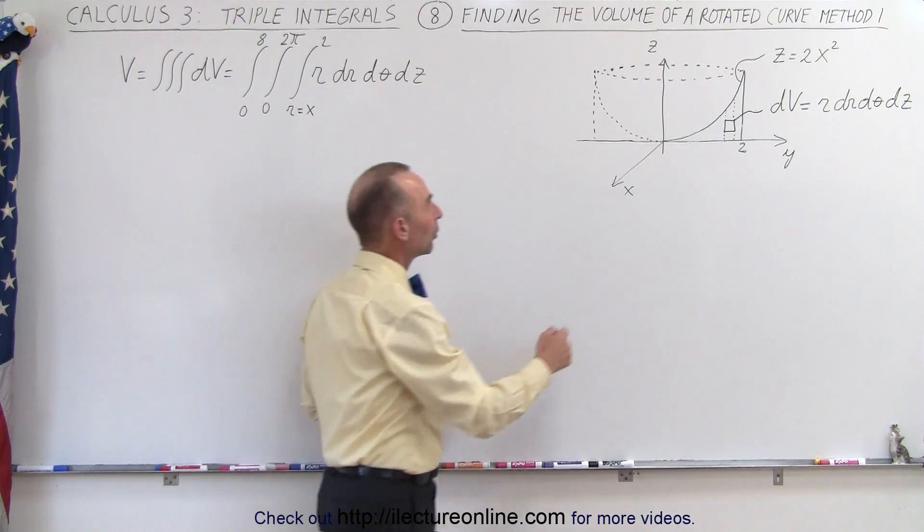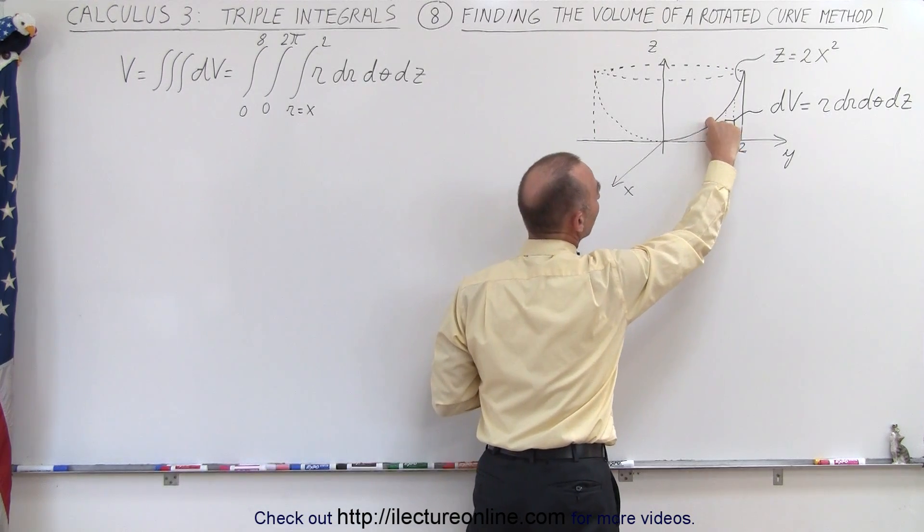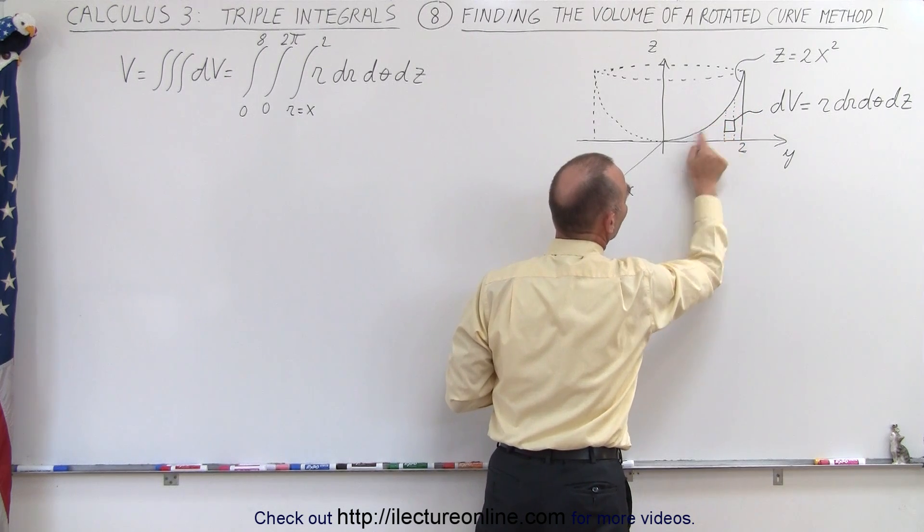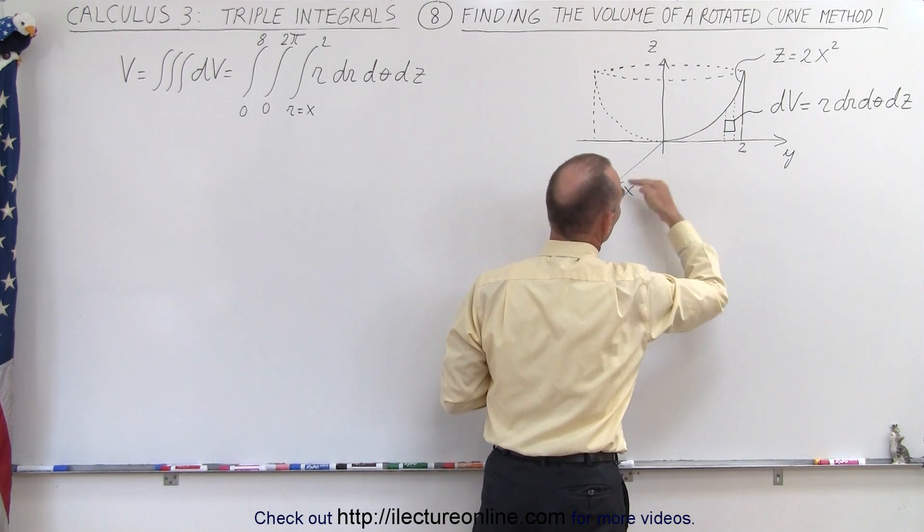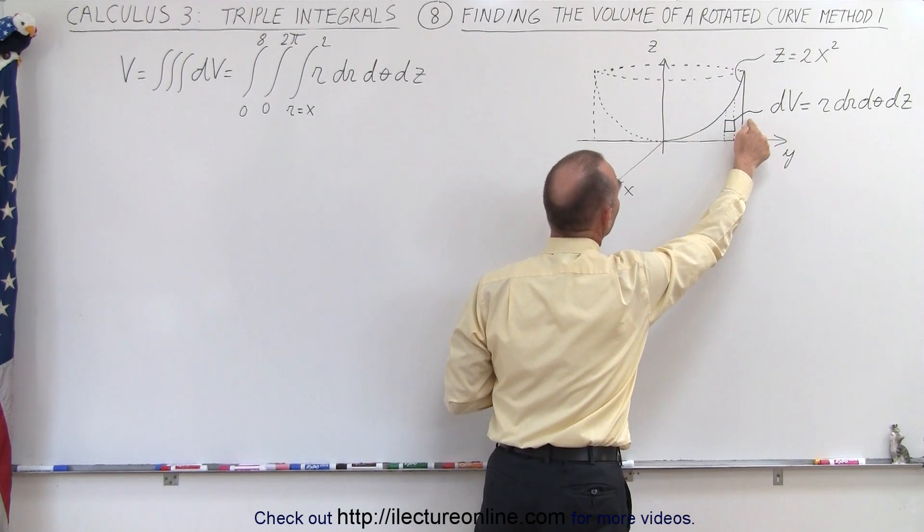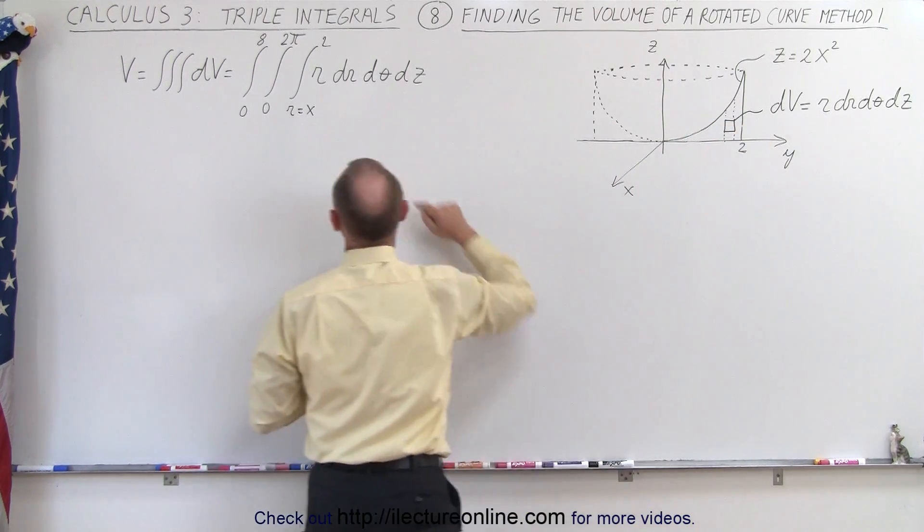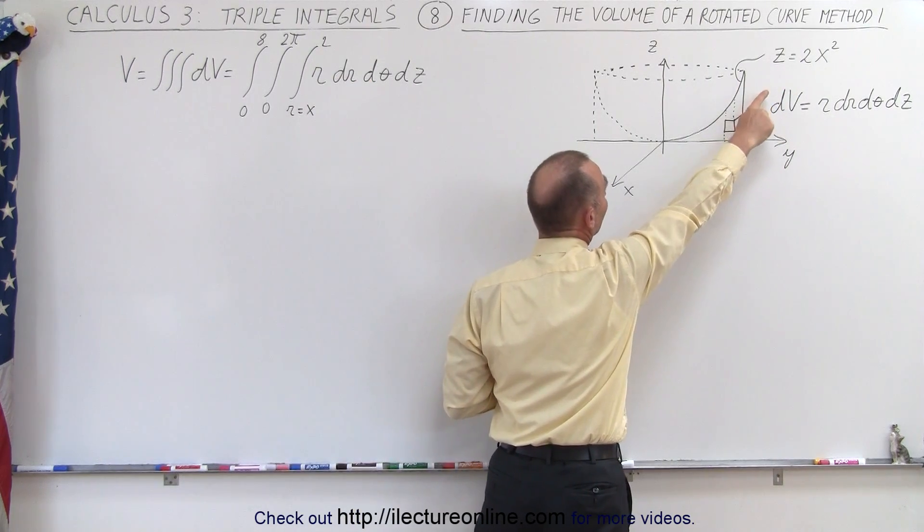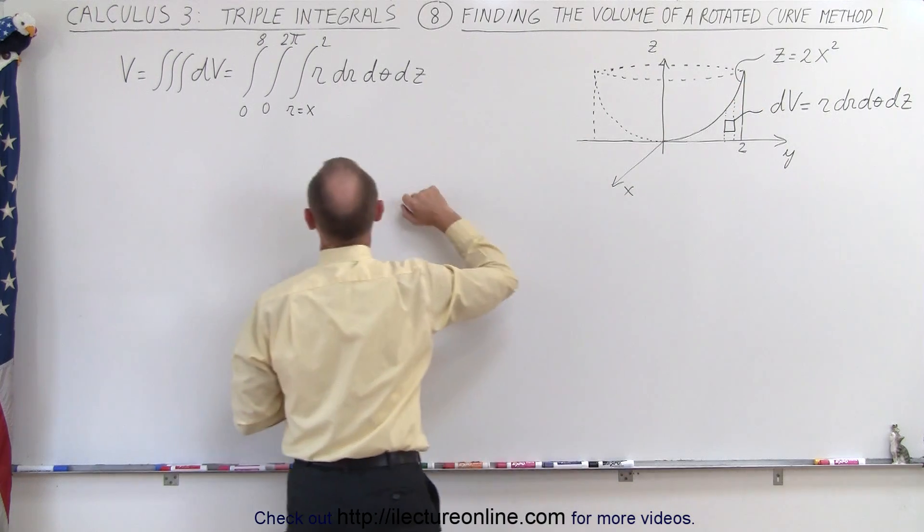For the r we're going to integrate from here to there, so from the curve to the edge. The edge is 2, but the curve, of course in the x-direction—we'll start with the x-direction—is from x to the edge of the curve which is 2, so from x to 2. Then of course we realize that x can be written in terms of z, so we'll go ahead and make that transformation.